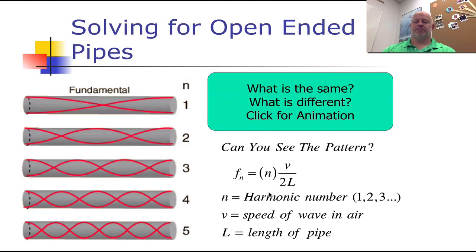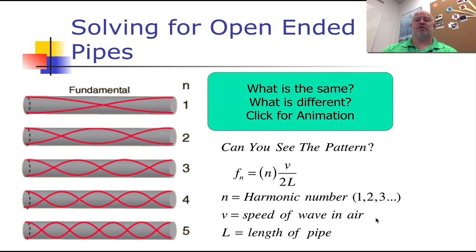Going back into our notes, everything is the same for the equation. n is still your harmonic number, you're still using the half because we have a half-wavelength pattern. The velocity is the speed of the wave in air — make a note of this. With strings we talked about velocity as the wave moved up and down the string, not in air, but here it is in air. So at zero degrees Celsius we'd have 331 meters per second, and we know how to adjust the speed in air based on temperature from the equation we did previously.